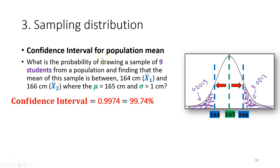The interval estimate is sometimes also called the confidence interval for the population mean. The way we calculate the confidence interval follows the same approach as the interval estimate.